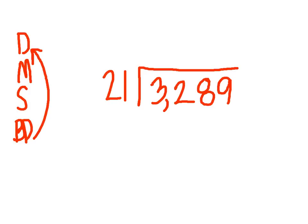Now we have a 2-digit number that's outside the house, so we need to think of how we're going to use that in order to solve our division problem. We have 3,289 divided by 21. This works the same exact way: you divide, multiply, subtract, bring down, and then start over again.